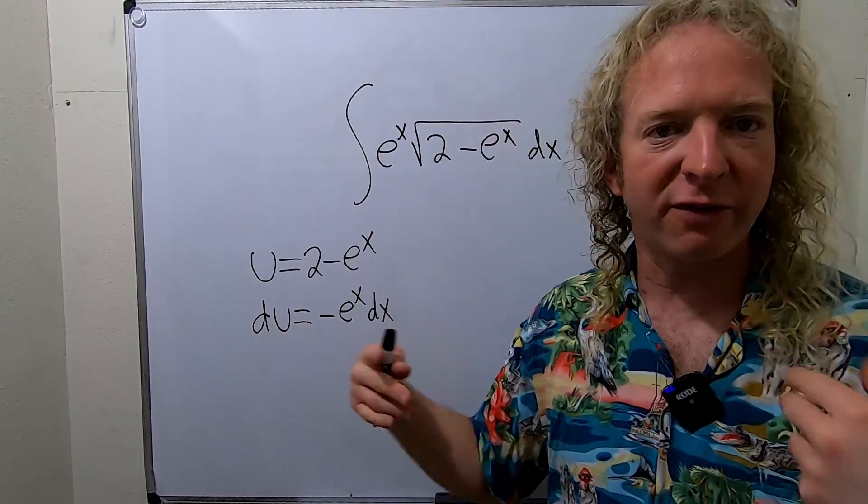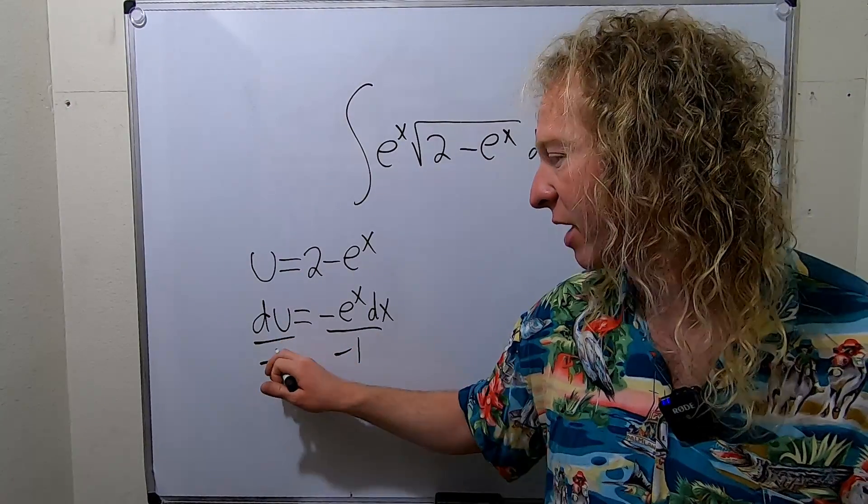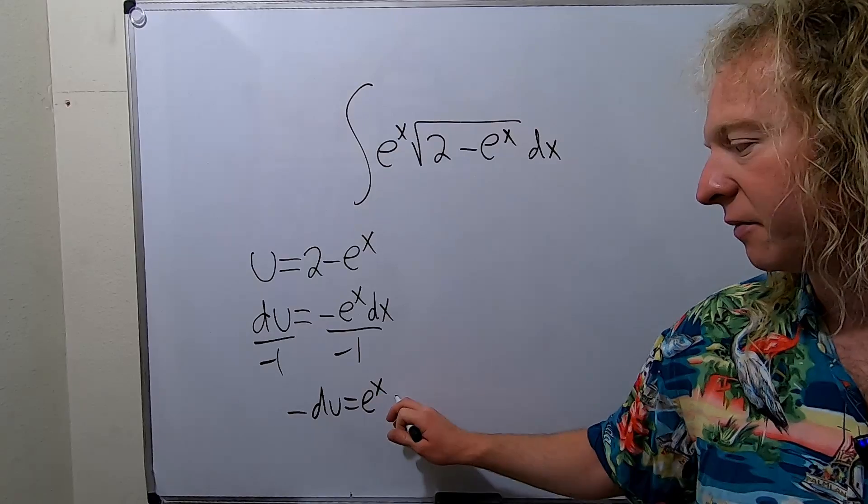So you can multiply by negative 1 or divide by negative 1. It doesn't really matter. I'm just going to do this to indicate we're dividing. So you get negative du equals e to the x dx.